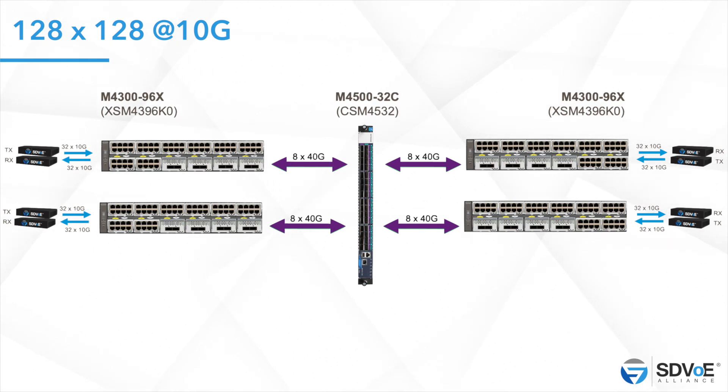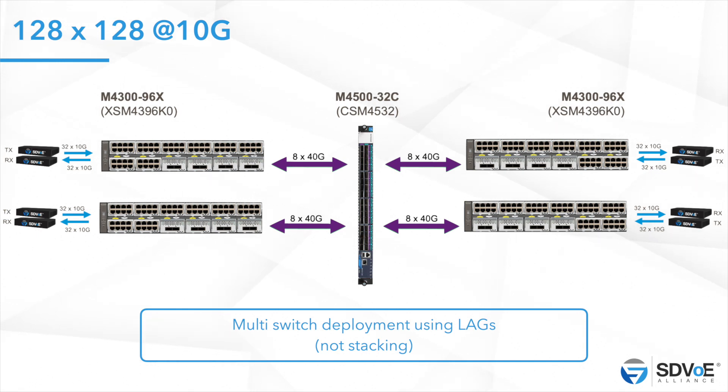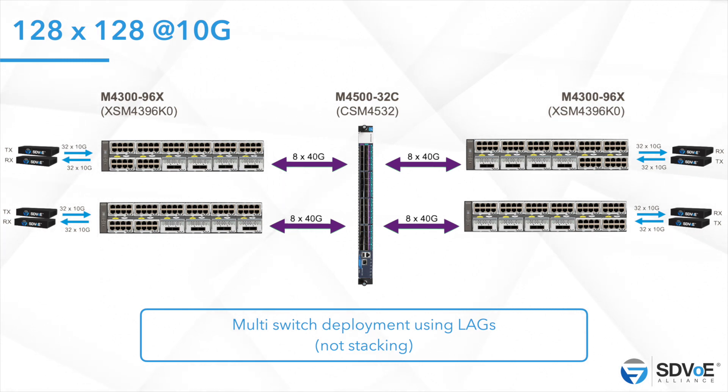For a fully line-rate design — any source to any destination, left-to-right and right-to-left, anything anywhere anytime — you need 32 encoders and 32 receivers on every switch, arranged symmetrically. That way you can send and receive 240G from the network core, which is line-rate using eight 40G links via a core switch. The result is a non-blocking installation. Best advice: keep it simple, two tiers only. If you need true one-to-one matrix capability, you must design for line rate.